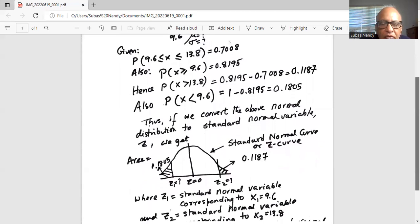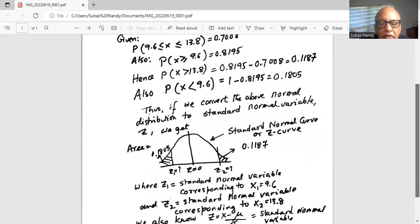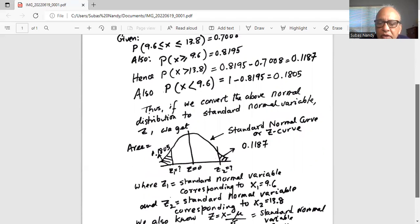Similarly, z₂ corresponds to 13.8, where P(X > 13.8) = 0.1187. So we indicate 9.6 by z₁ and 13.8 by z₂.